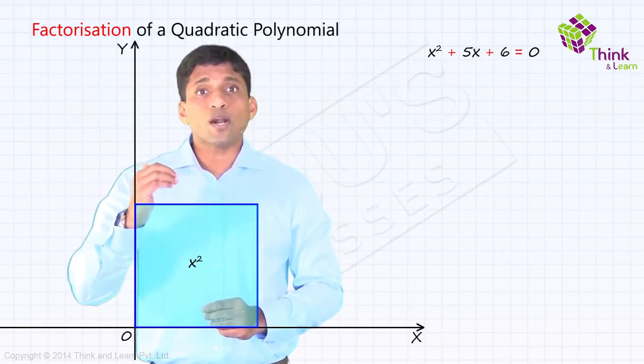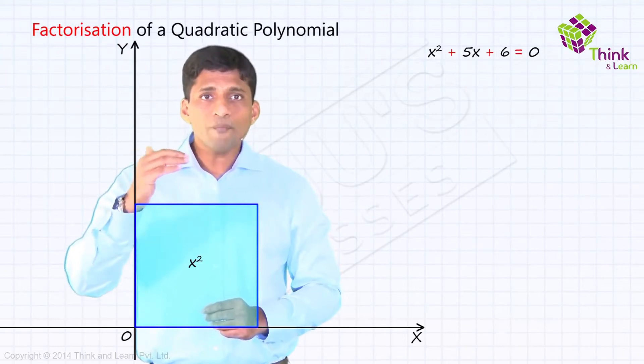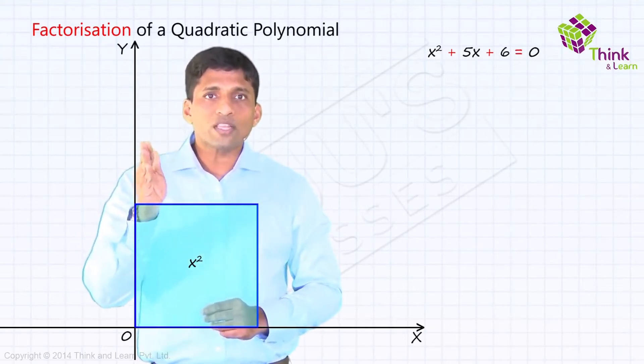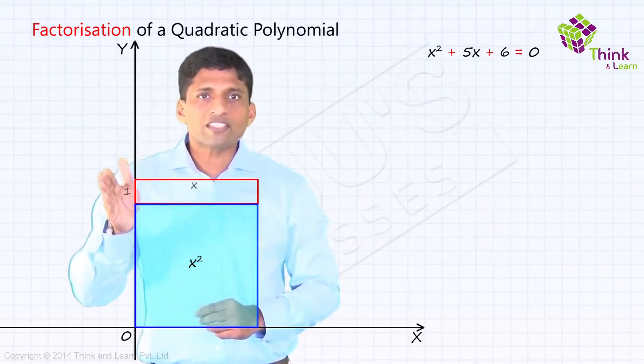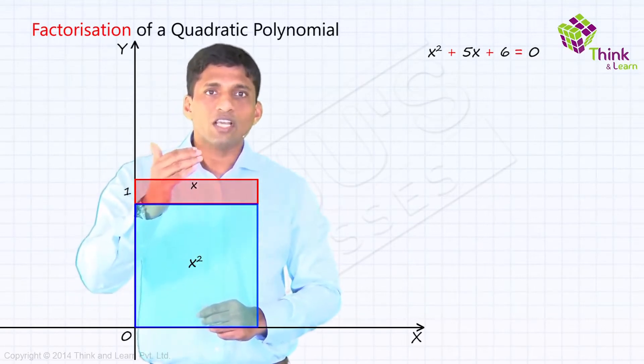What is x? If you want to visualize here, x is a rectangle. So I take a rectangle here with length on top of this x square, where length is x, but take breadth as 1. So you get x square plus x.